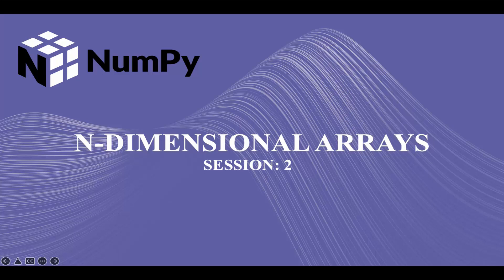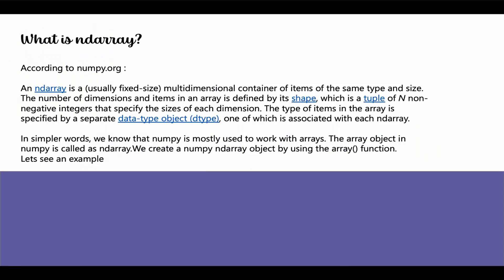Hello, welcome back to our course on NumPy. Today we are going to learn about n-dimensional arrays. Our first question is: what is ndarray? According to numpy.org, an ndarray is a usually fixed-size, multi-dimensional container of items of the same type and size. The number of dimensions and items in an array is defined by its shape, which is a tuple of n non-negative integers that specify the sizes of each dimension. The type of items in the array is specified by a separate data type object called dtype, one of which is associated with each ndarray.